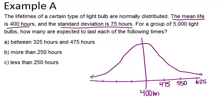Below the mean, I would subtract 75 to find each of these values, and I'd get 325, 250, and 175.